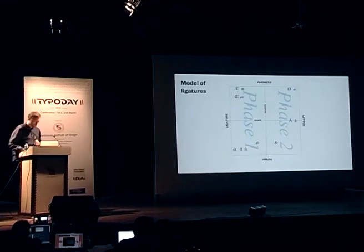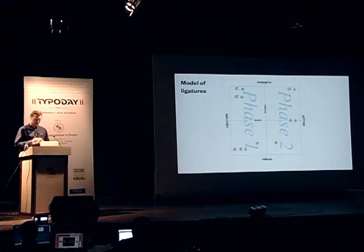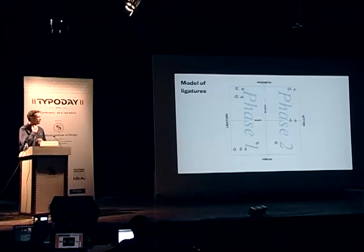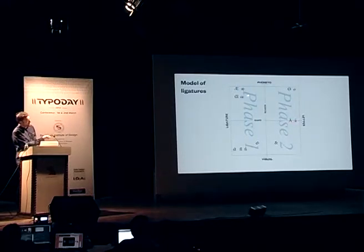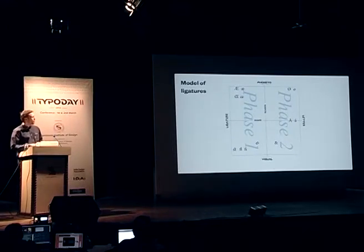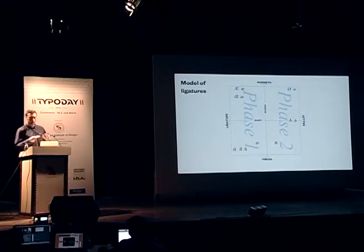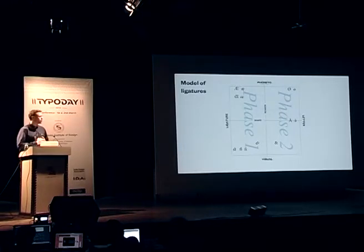So I wanted to make these new letters and letter combinations, and I therefore looked into ligatures, because ligatures already exist in our existing alphabet. We have things like the A, and then the French OE, which is actually a new character but in a way it's a ligature, because you can see it comes from two existing characters merged together.